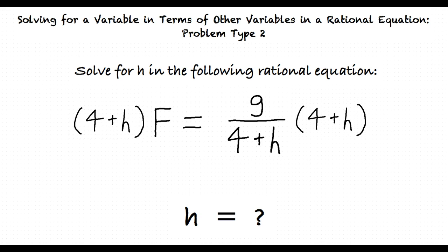Why do we multiply both sides by the entire denominator 4 plus h instead of just h? Good question. If we were to multiply both sides by h, the 4 plus h would remain in the denominator of the fraction. So this would just introduce more instances of the variable h when we are trying to isolate the equation for h.